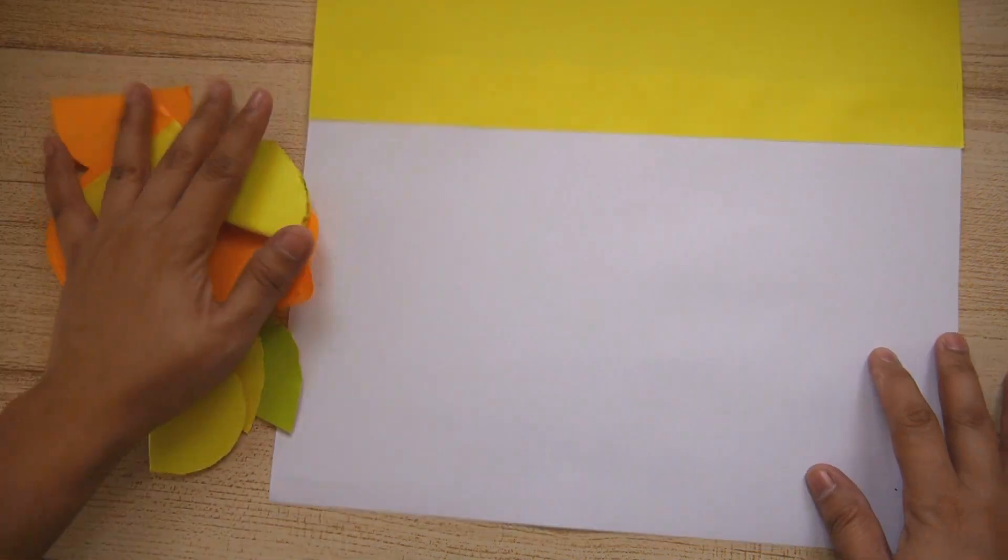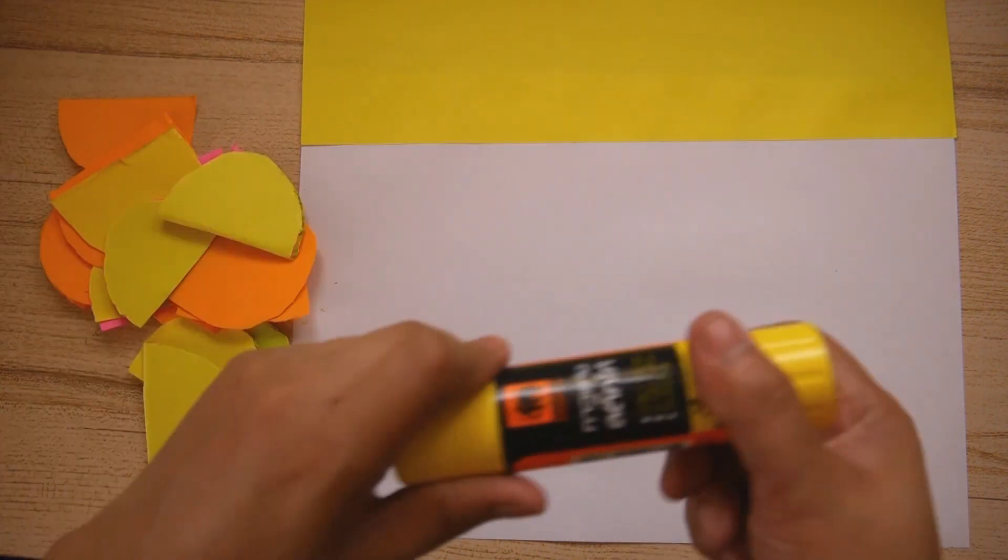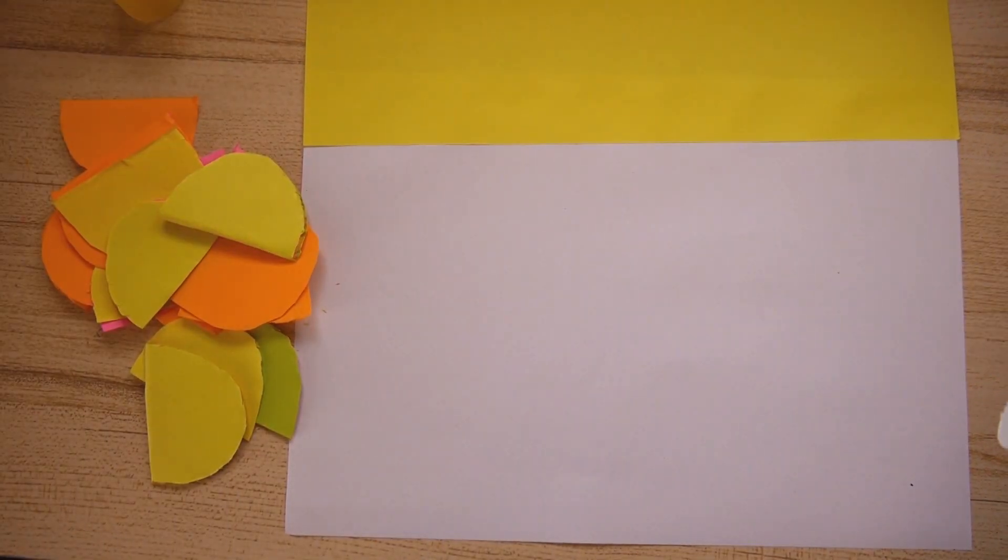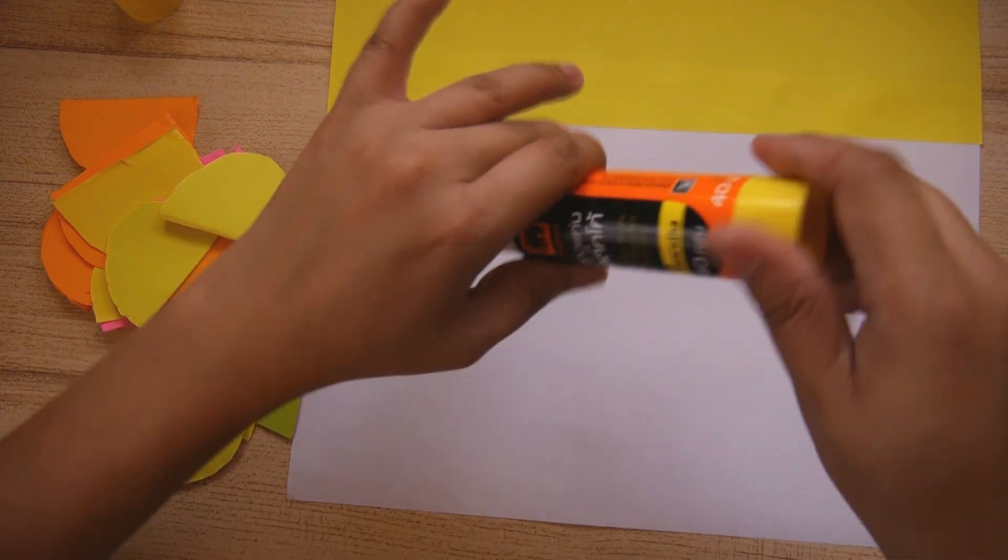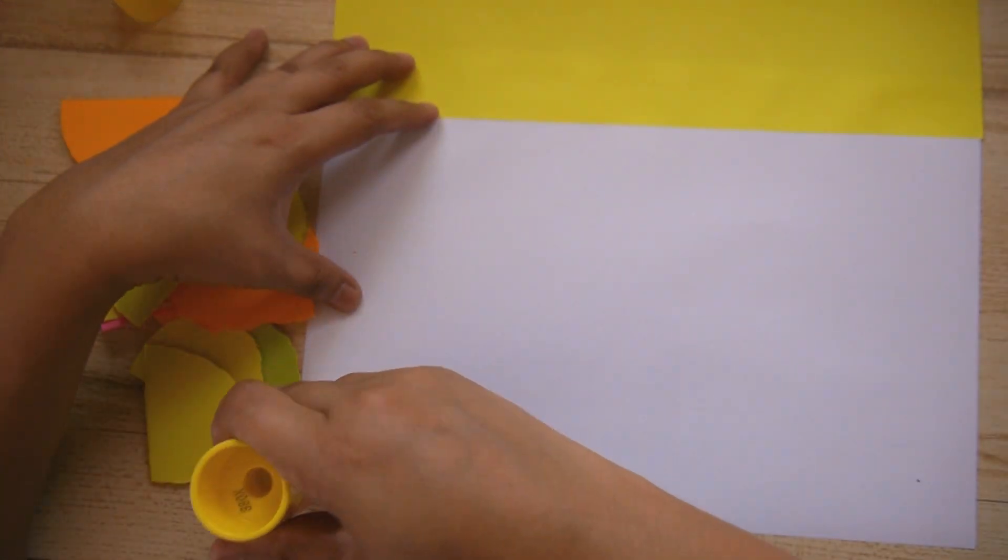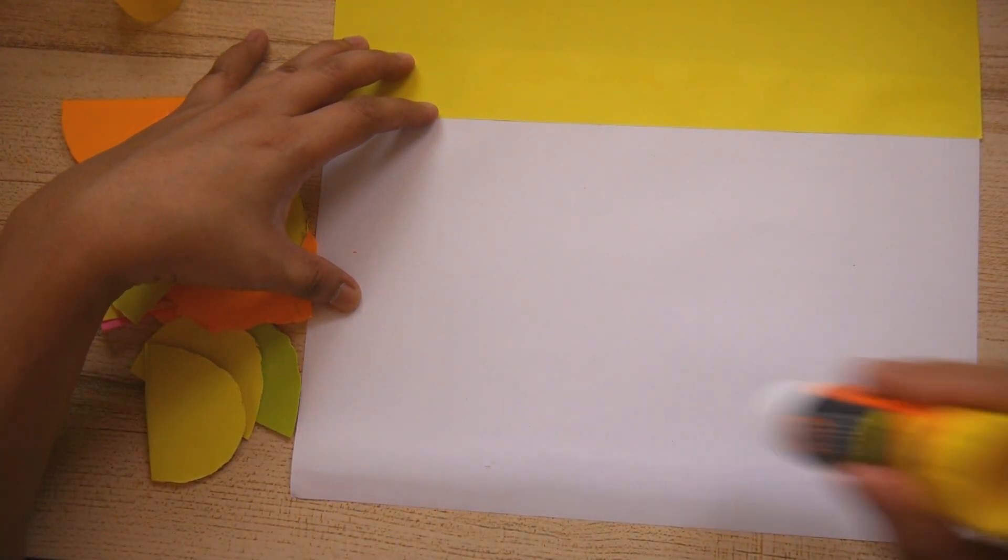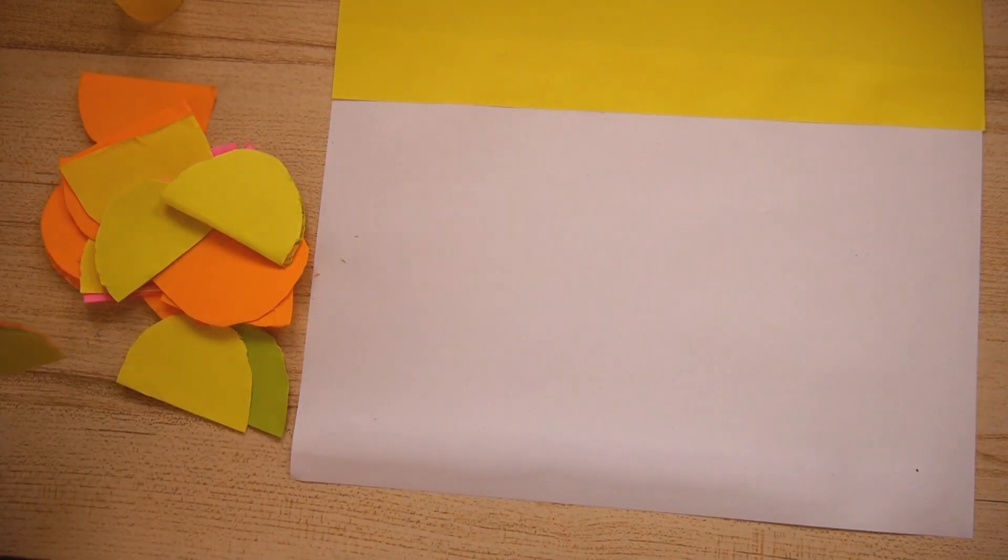Now I'm ready to glue them. Start from the bottom. Apply glue on the bottom of the paper and then one by one arrange the fish scales in a row.